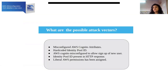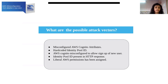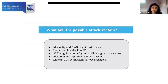So what could be the possible attack vectors? First, misconfigured AWS Cognito attributes. Second, hardcoded identity pool ID. Third, AWS Cognito misconfigured to allow sign-up of new users. Fourth, identity pool ID present in HTTP response — like if you are capturing the HTTP request and you see the identity pool ID present in the response, and a liberal AWS permission has been assigned.